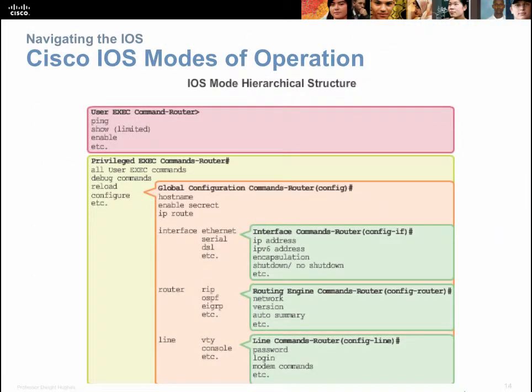Cisco's operating system is a modal operating system — a hierarchical system where different commands are typed at different prompts. In a non-modal system, you can type any command at any prompt. In a modal system, only certain commands can be issued at certain prompts. The first mode is user exec — that's a limited prompt. Notice the greater-than sign (caret) at the end of the command prompt, indicating you're at user exec, a restricted mode where you can only type very few things.